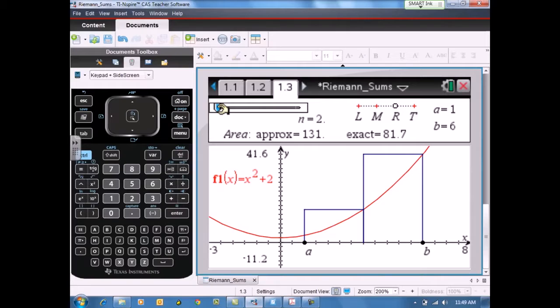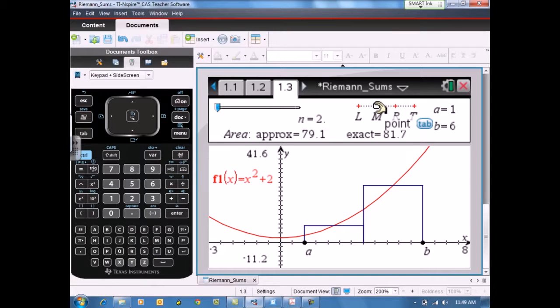There are also some guiding questions about changing the method to midpoint rectangles. So, as the students change that slider to the M, they will see now that their rectangles, the heights of those rectangles are actually determined by the midpoint of the interval. There are some wonderful questions about whether this approximation technique is different from the right or the left, and most students are able to see that this is a better approximation method.